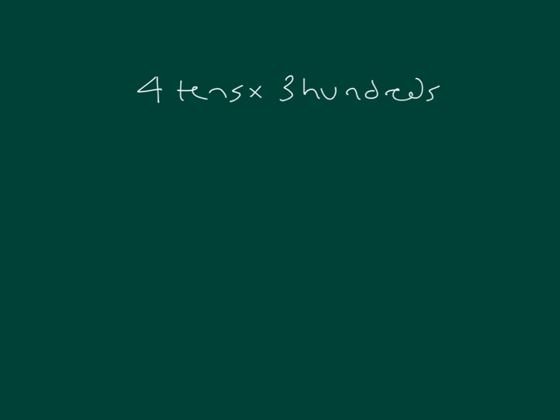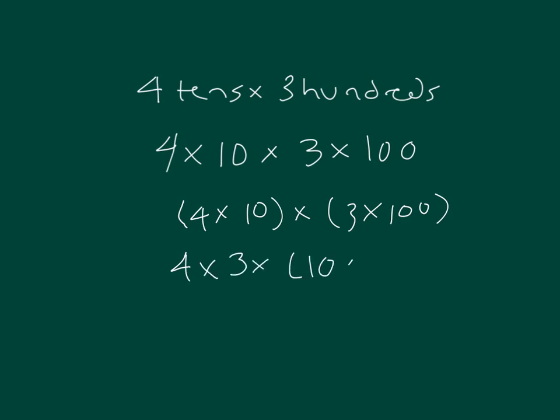4 tens is the same as 4 times 10. And 3 hundreds is the same as 3 times 100. We could rewrite our problem so that we have 4 times 10 times 3 times 100, or we could move things around a little bit and write it as 4 times 3 times 10 times 100.